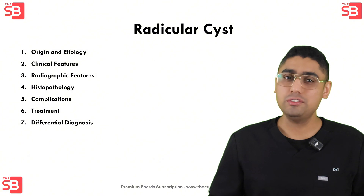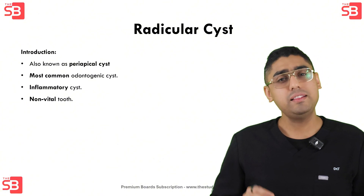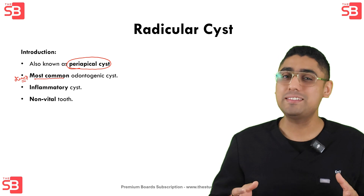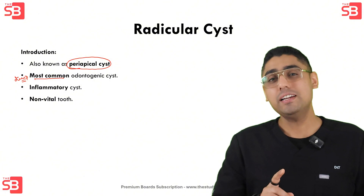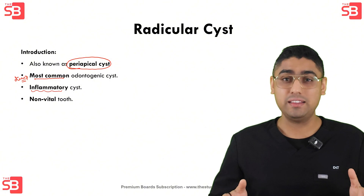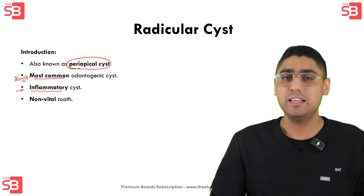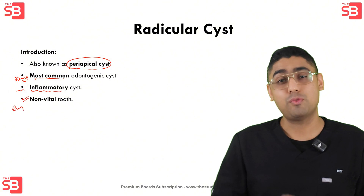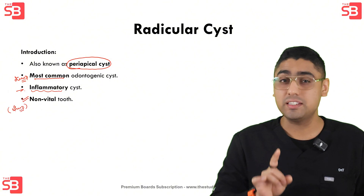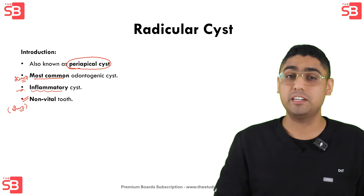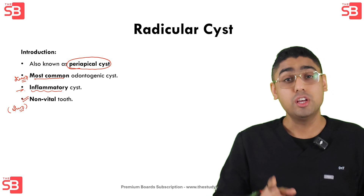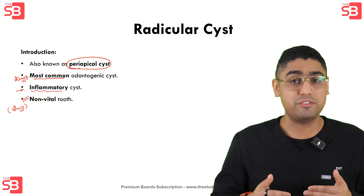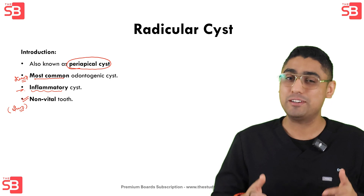The radicular cyst is also known as the periapical cyst and is the most common type of odontogenic cyst. Radicular cysts are classified as inflammatory cysts, meaning they form as a result of inflammation — specifically inflammation related to the pulp of the tooth. One important point to remember: a radicular cyst is always associated with a non-vital tooth. This is an exam question. It is a reaction to infection and tissue death that has occurred within the tooth.